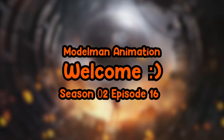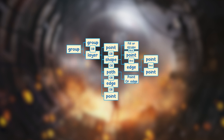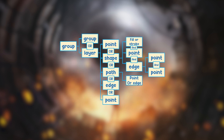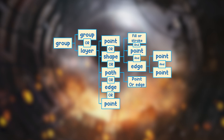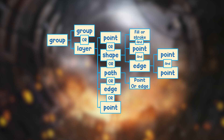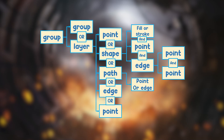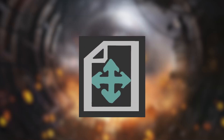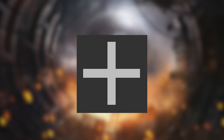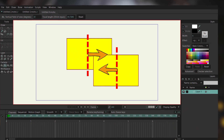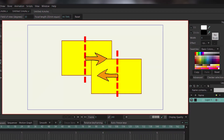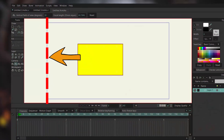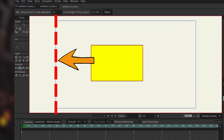Hey guys! I'm here again with another extraordinary tutorial about Moho. In this video, I'm gonna talk about the classification of a document in Moho and the explanation of some commonly used terms such as points, edge, path, shape, layer, and group. And then we're gonna learn how to use the transform layer tool and the set origin tool, and also how to align a shape with another or how to align a shape with the border of your workspace in Moho. Let's go!